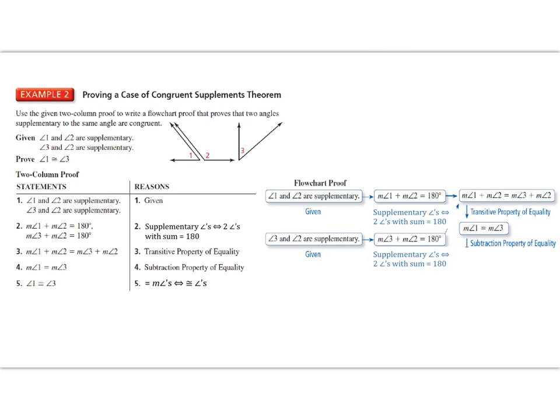Then I can say that the measure of angle 1 equals the measure of angle 3, because angle 2 is the same angle added on both sides — so I subtract that angle from both sides — resulting in angle 1 congruent to angle 3. That's because equal measured angles always implies congruent angles. We're just practicing going from one form of proof to another, learning the structure while also proving logically from a given to a goal statement.